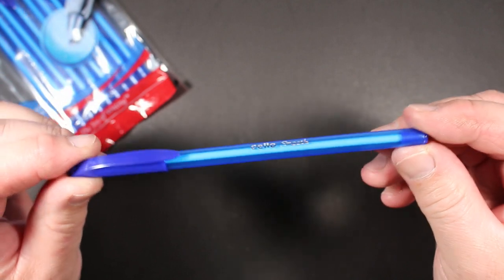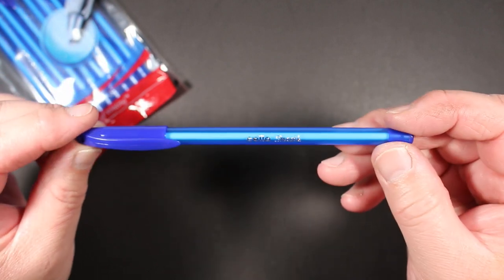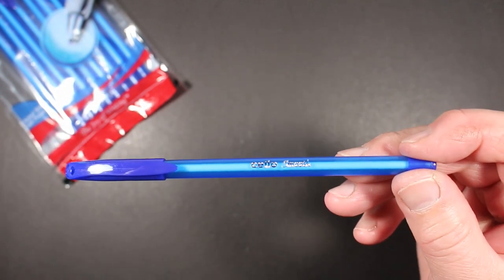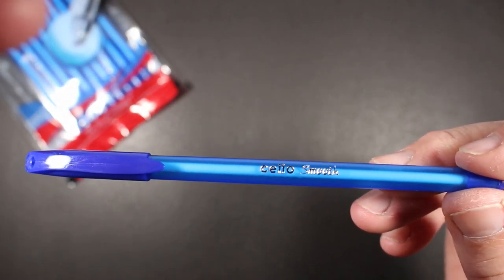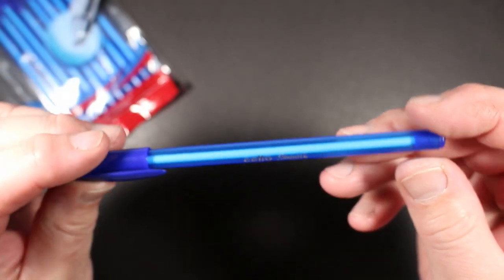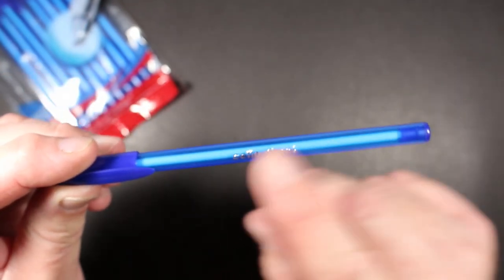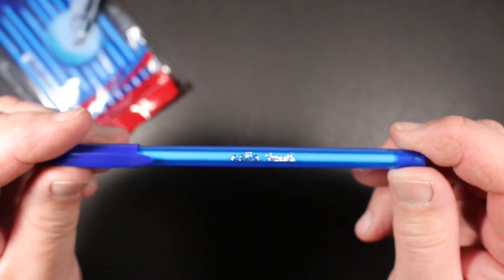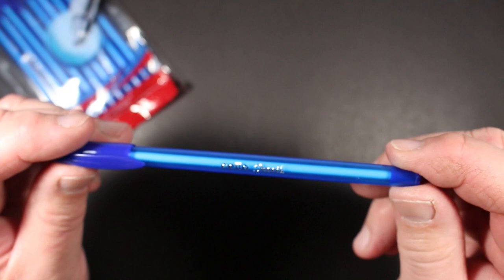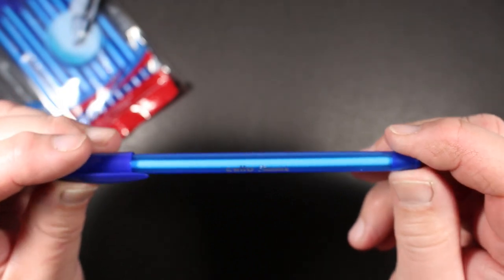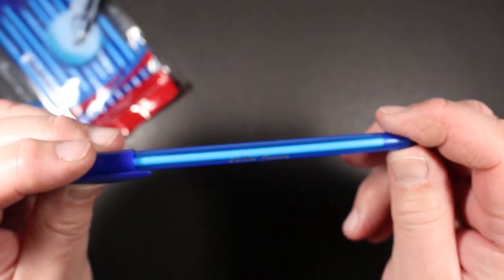So here's one of the pens. As you can see, I'll try to focus in a little bit. It has a blue fairly translucent barrel. You can see the ink tube, although the ink tube is white. You cannot see the ink level in the tube or how much ink is in there.